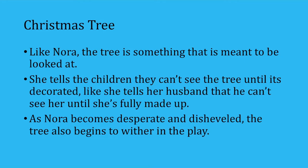The Christmas tree is an important symbol to pay attention to in the analysis. Like Nora, the tree is something that is meant to be looked at — she tells the children they can't see the tree until it's decorated, just as she tells her husband he cannot see her until she's fully made up and beautiful. The tree is treated in much the same superficial way as Nora is. As Nora becomes desperate and dishevelled, the tree also begins to wither in the play.